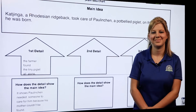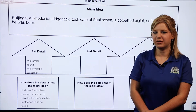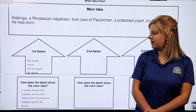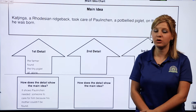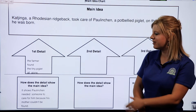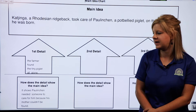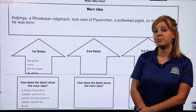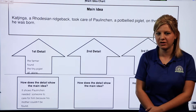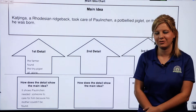As I think back on a detail from the beginning of the text, I know that the farmer found this tiny little piglet all alone. The next question is: how does that detail show the main idea? Well, it shows that Palenchen needed someone to take care of him because the mama pig was nowhere to be found.